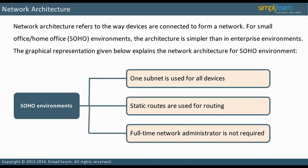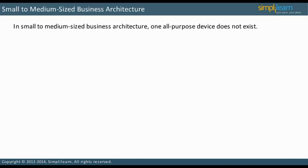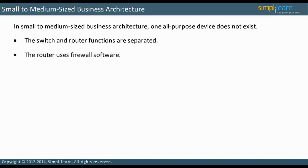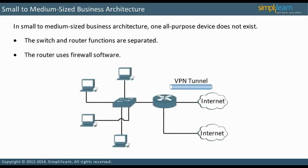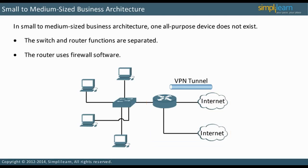Let us look into small office, home office architecture. Here it is seen that there is no longer one all-purpose device. The switch and router functions are separated. As the number of network devices increase, a router no longer provides enough interfaces to connect them all. Therefore, a switch is implemented. The router uses firewall software; in this architecture, a stand-alone firewall device is normally not deployed. Note that in the figure on the slide, there are two connections to the Internet — one through a tunnel and one straight to the Internet. This does not mean that there must be two physical connections to the Internet, as this separation can be implemented with software.